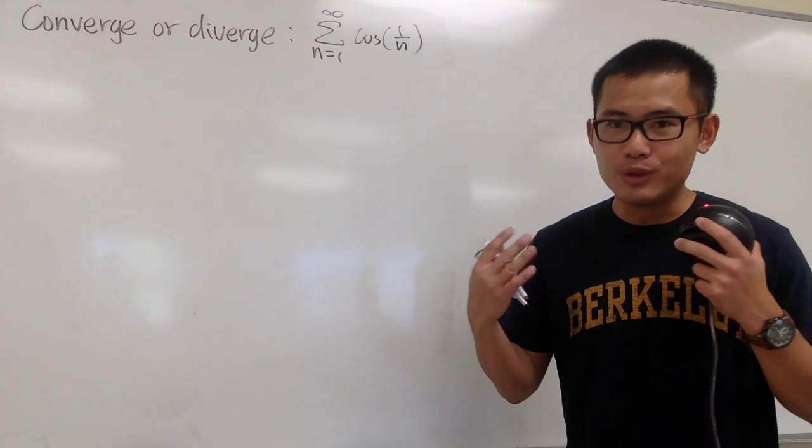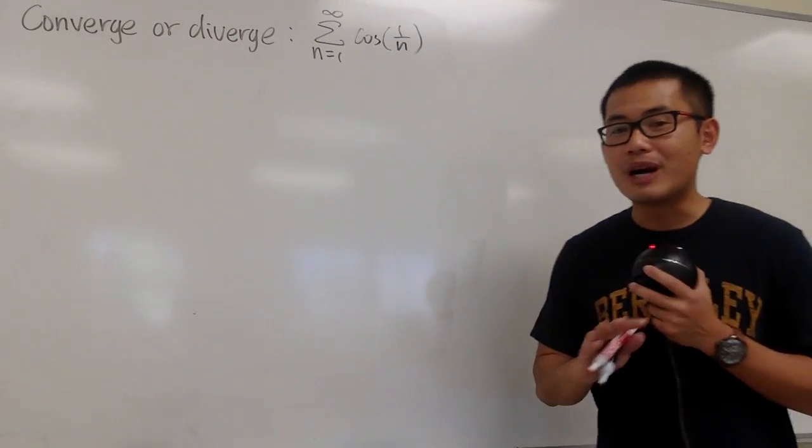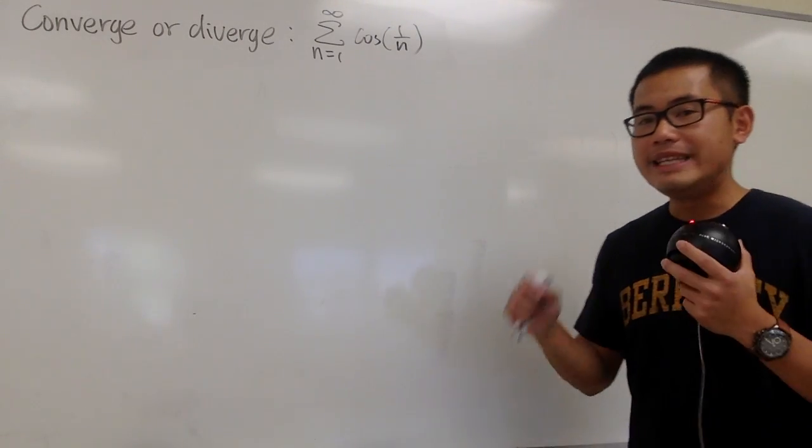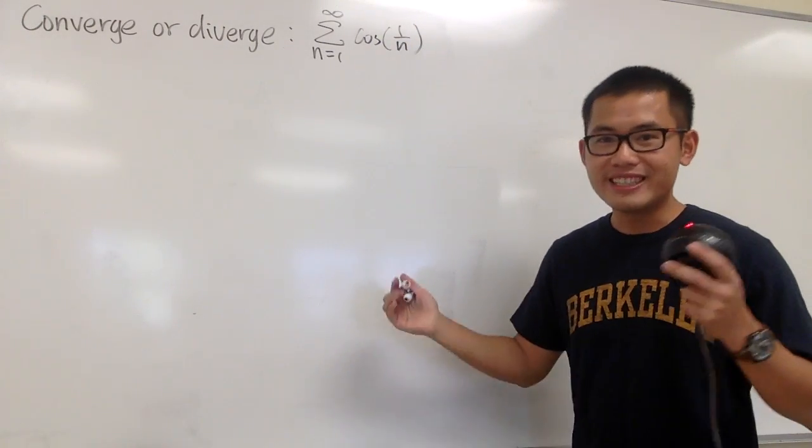This right here, we will use the limit comparison test. And maybe we can do the same thing right here, isn't it? But we don't have to do that right here. The only thing that we have to do is take the limit of cosine of 1 over n. That's it.